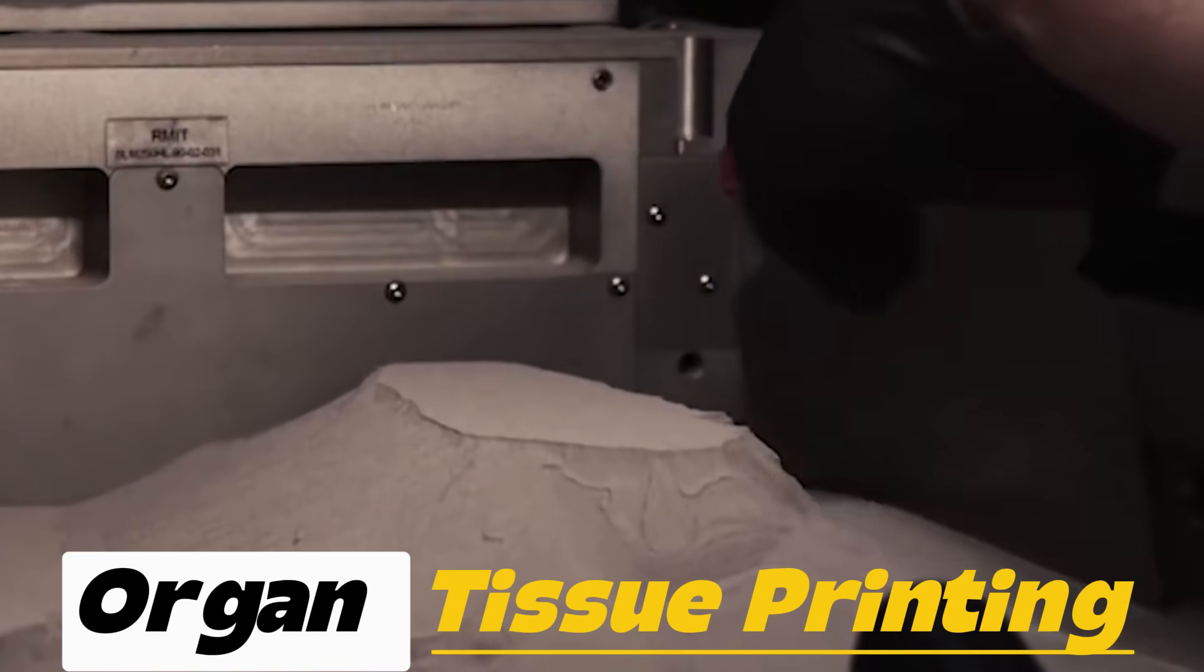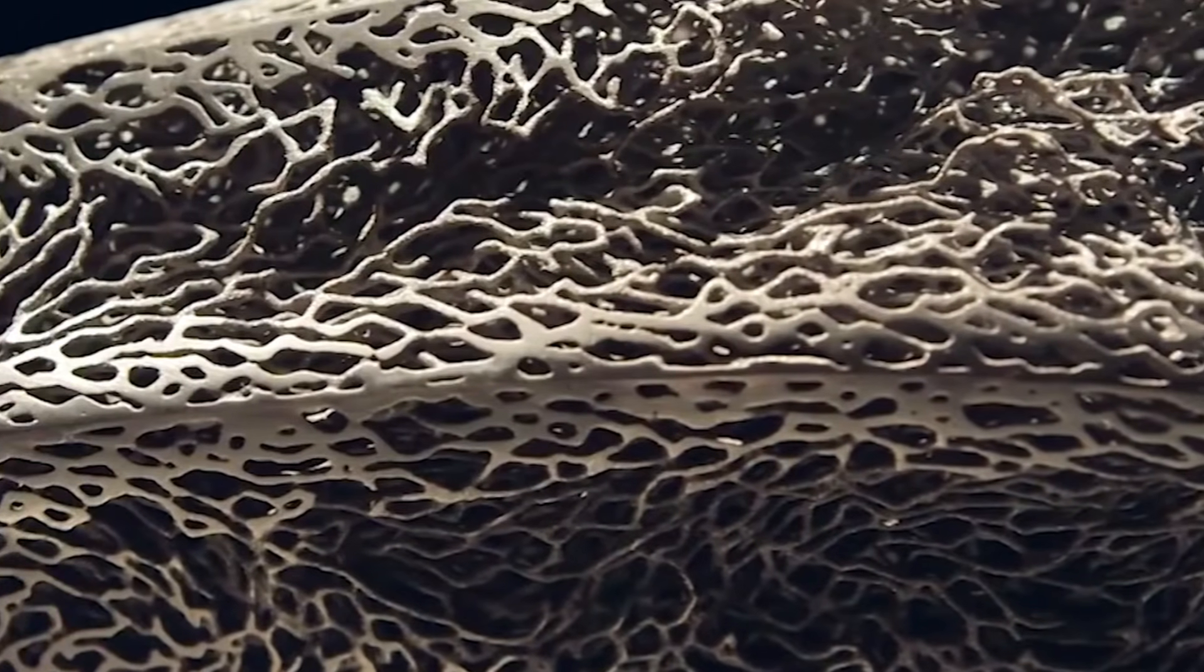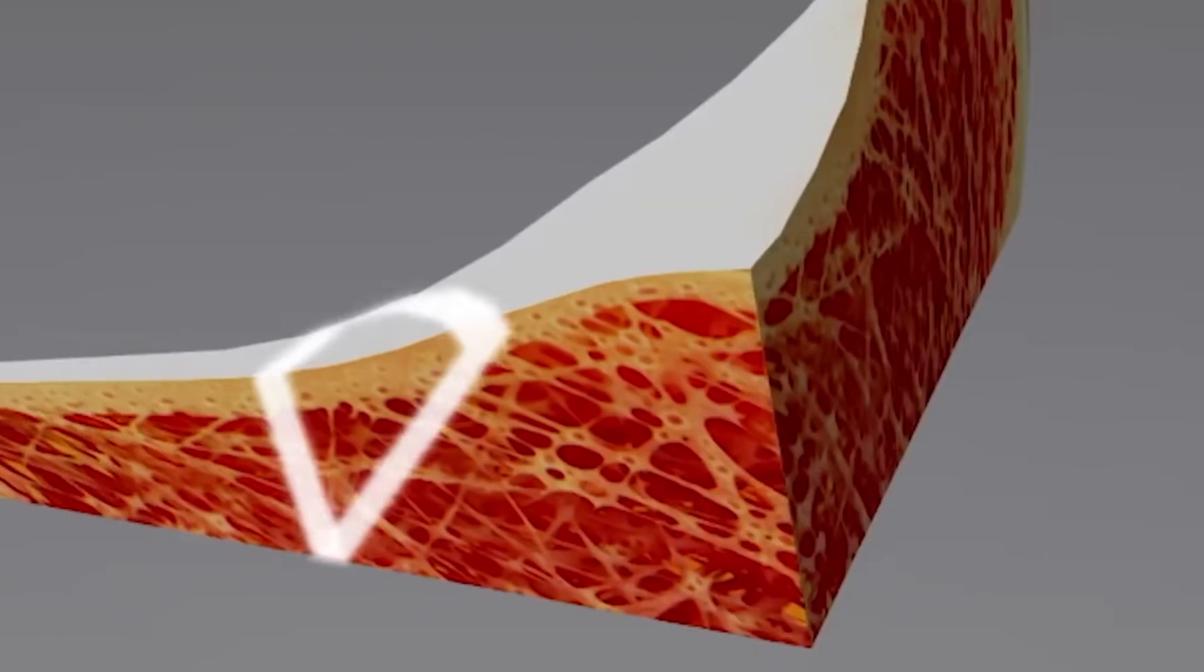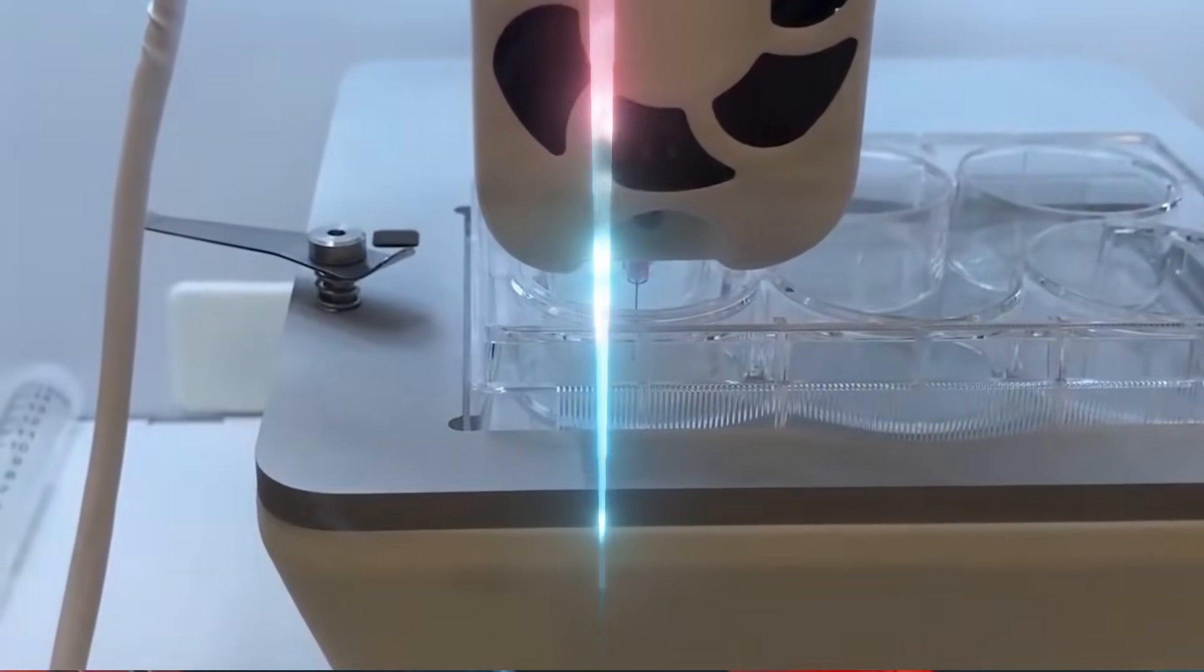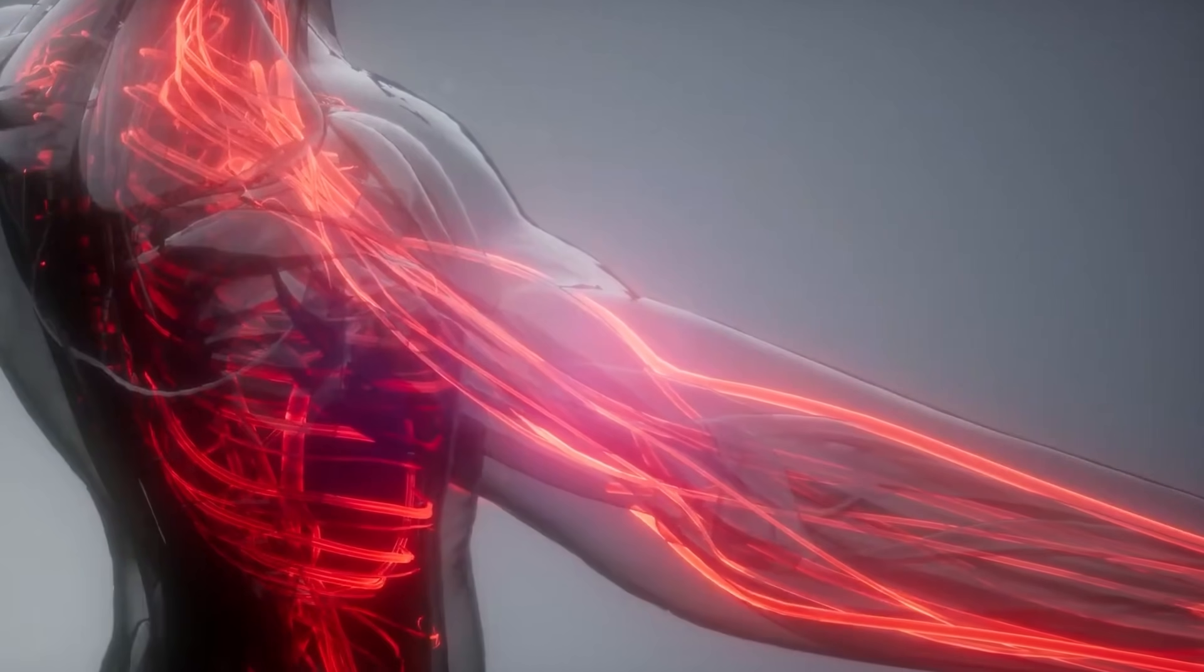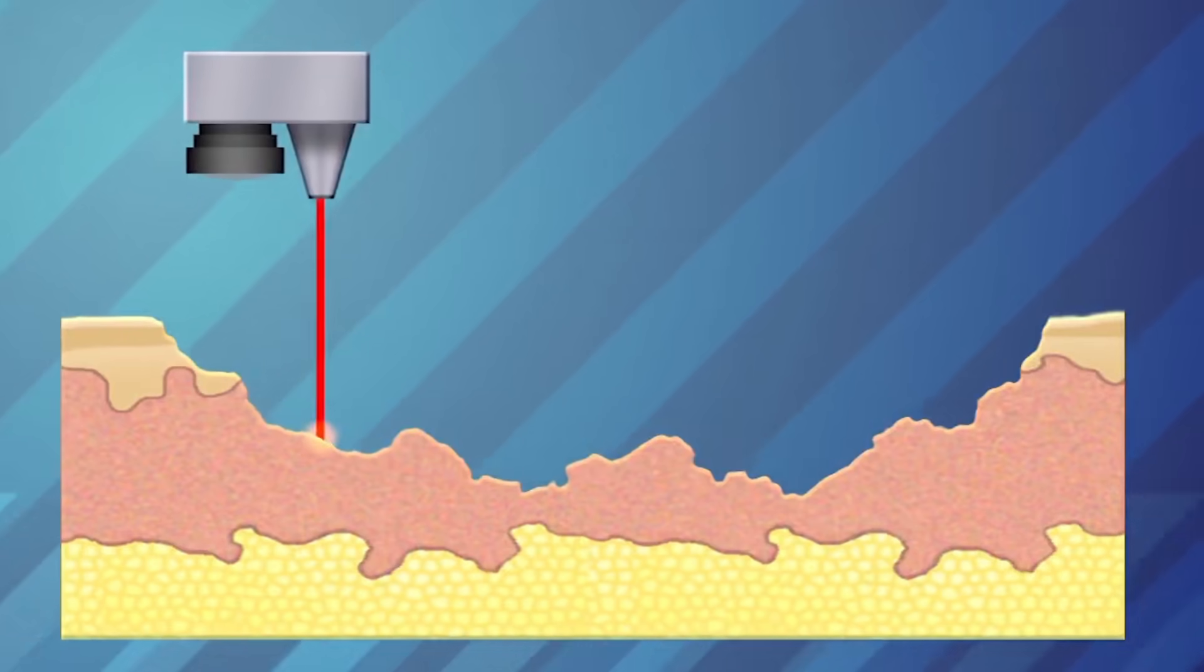Number 4. Organ and Tissue Printing focuses on producing functional human tissues and, eventually, entire organs using 3D bioprinting technology. This application addresses one of the most pressing medical challenges: the shortage of donor organs. By printing tissues such as skin, cartilage, liver sections, or kidney models, scientists can provide realistic platforms for drug testing, reducing reliance on animal experiments. In addition, bioprinted organs aim to replace damaged or diseased tissues in patients without the need for donor matches, as the cells used can be derived from the patient, minimizing the risk of immune rejection.